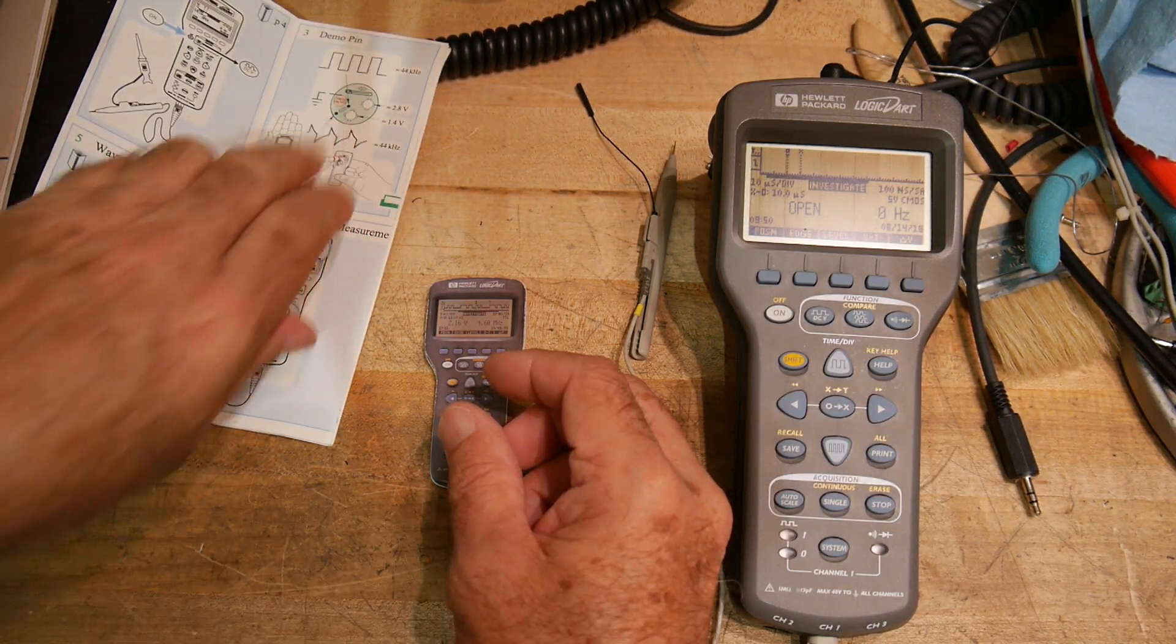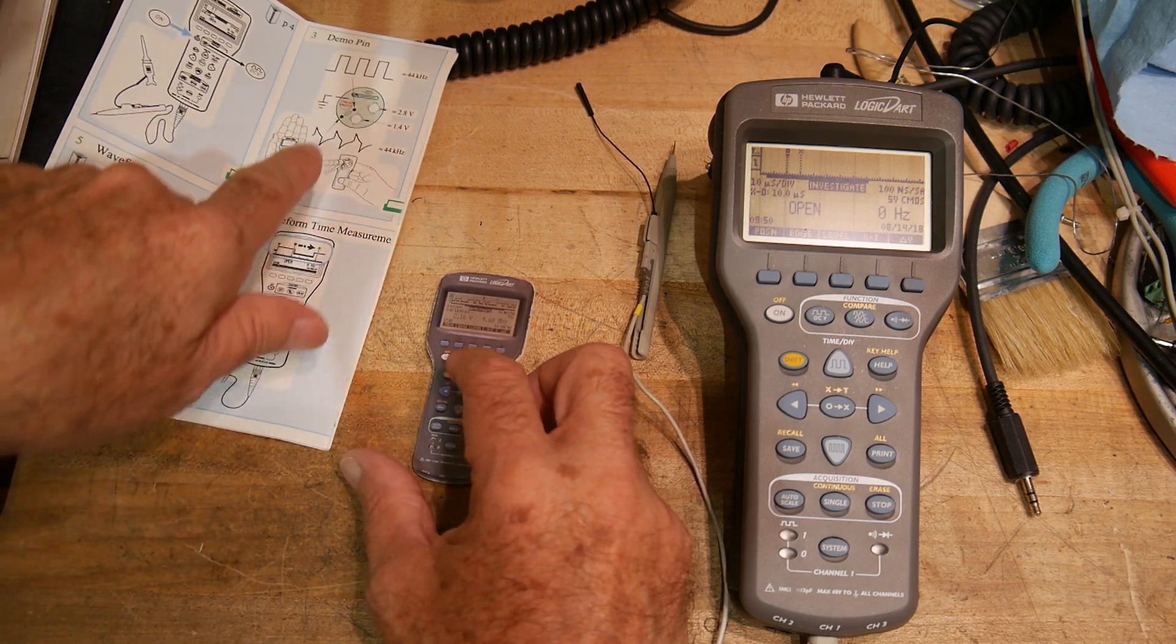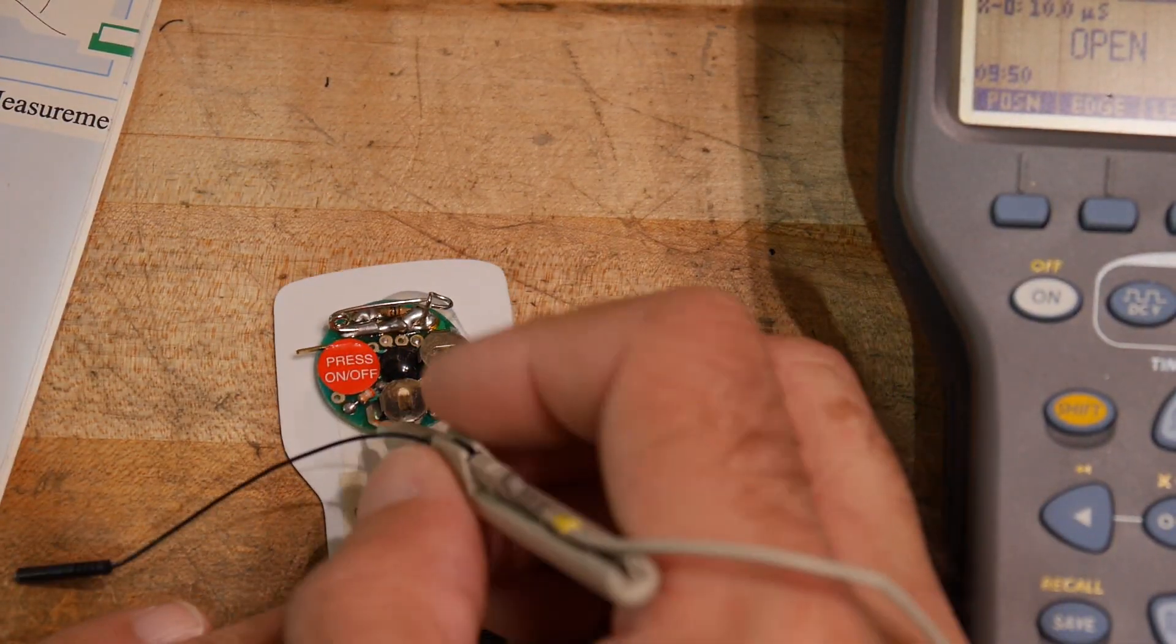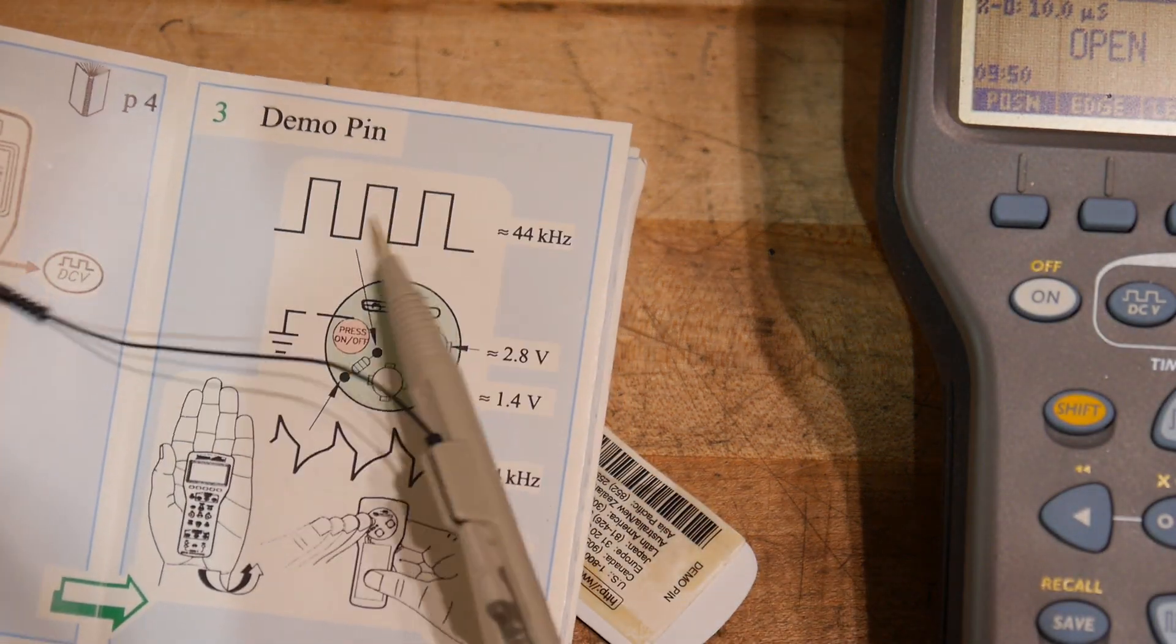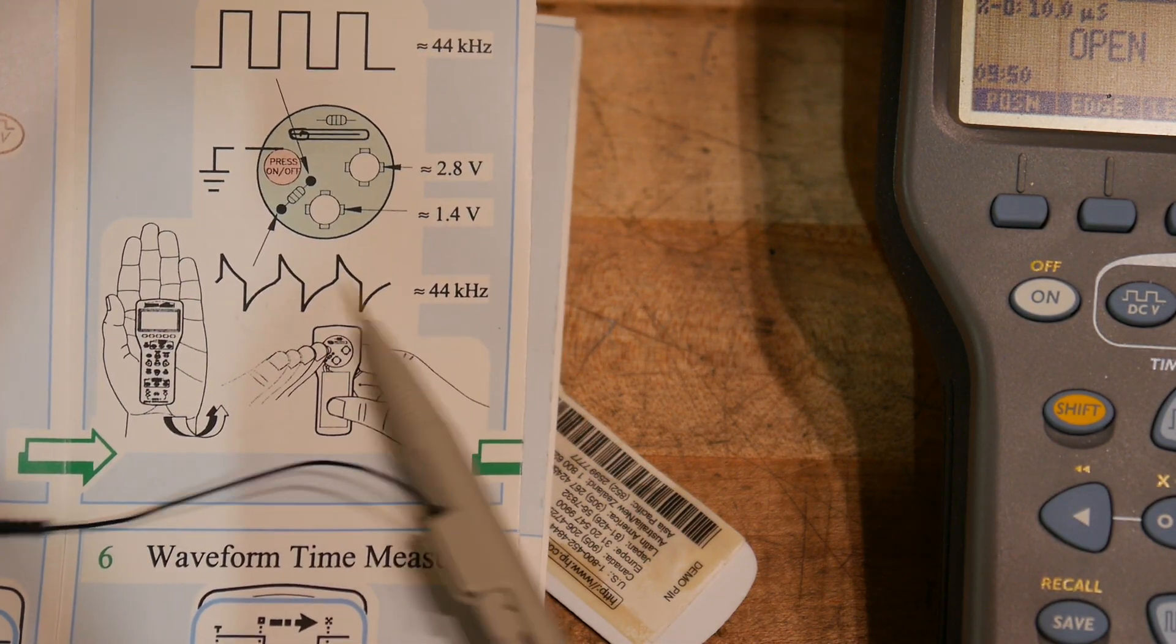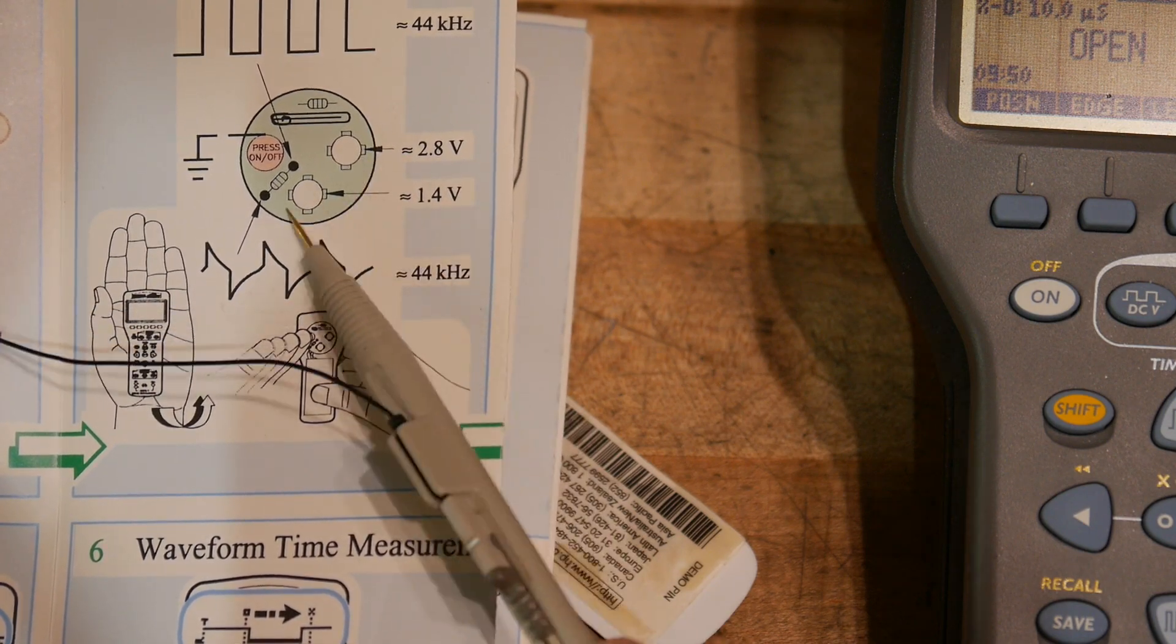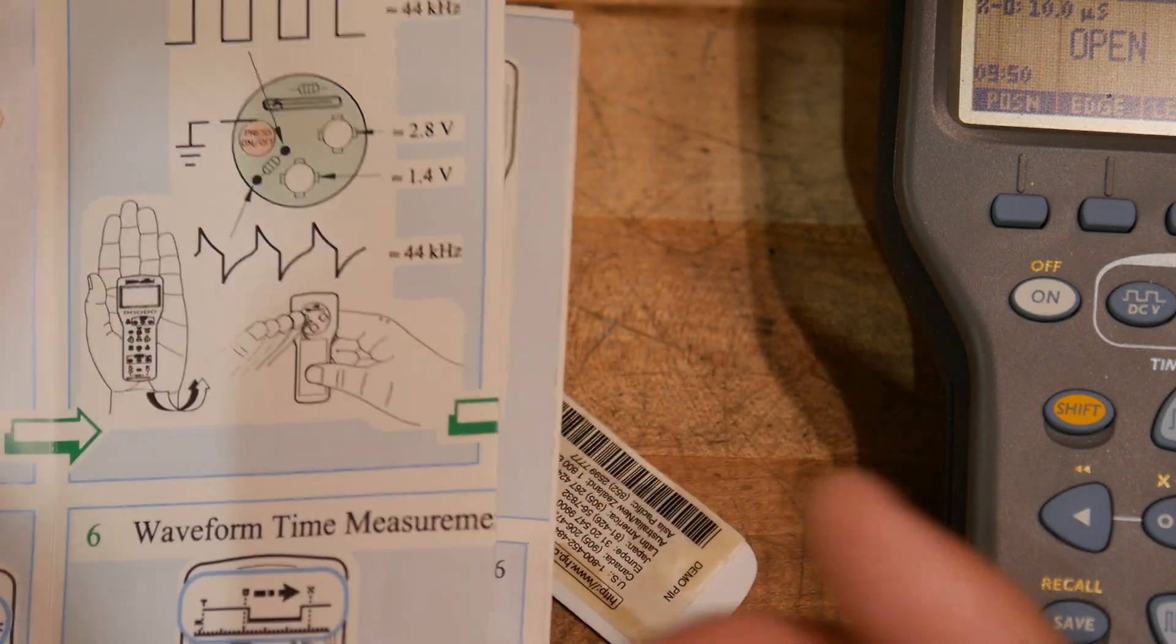So that's number three here the demo pin. It talks about a waveform being available on this resistor here. There's a resistor so this end of the resistor we're supposed to get a square wave and on the other end of the resistor we're supposed to get this shaped waveform here. We also can measure the battery voltage of 1.4 and then the 2.8 on the other one those combined. I guess you can make some measurements on this device and then there's a ground pin here.